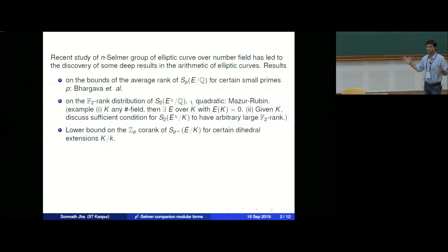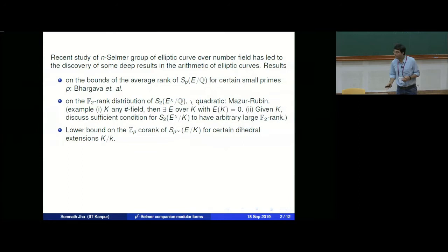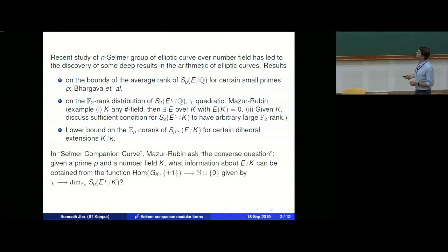One broad theme is: you fix an elliptic curve, twist it by a quadratic character χ, and see what happens to the rank distribution of the p-Selmer or 2-Selmer group. But in one paper in the series — called 'Selmer companion curves' — Mazur and Rubin ask the converse question.